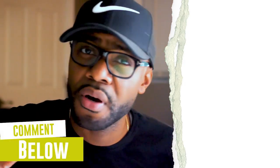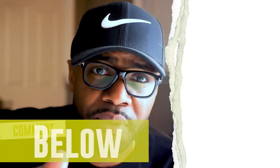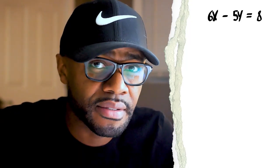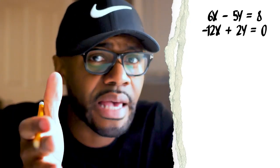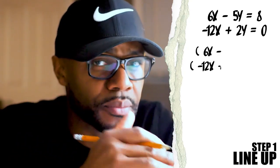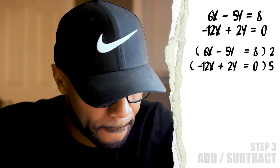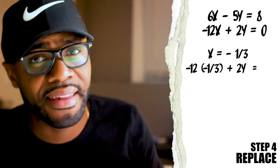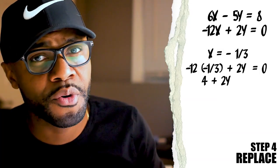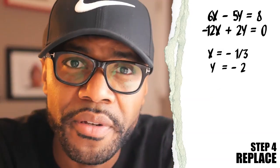I'm not going to talk as much so you can just see what we do on screen. Let me know if you have any questions in the comments below. The first problem reads: 6X minus 5Y equals 8, and negative 12X plus 2Y equals zero. You will see the steps being put into place, leaving us with an answer of X equaling one-third and Y equaling negative 2.